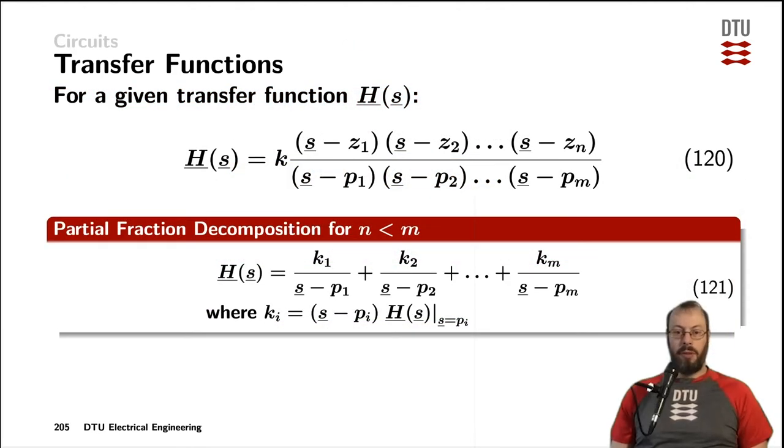Very often, when we are calculating the transfer function of a circuit, we would end up with polynomials in the numerator and in the denominator, as we have seen from the examples with the LCR network and with the oscilloscope probe.